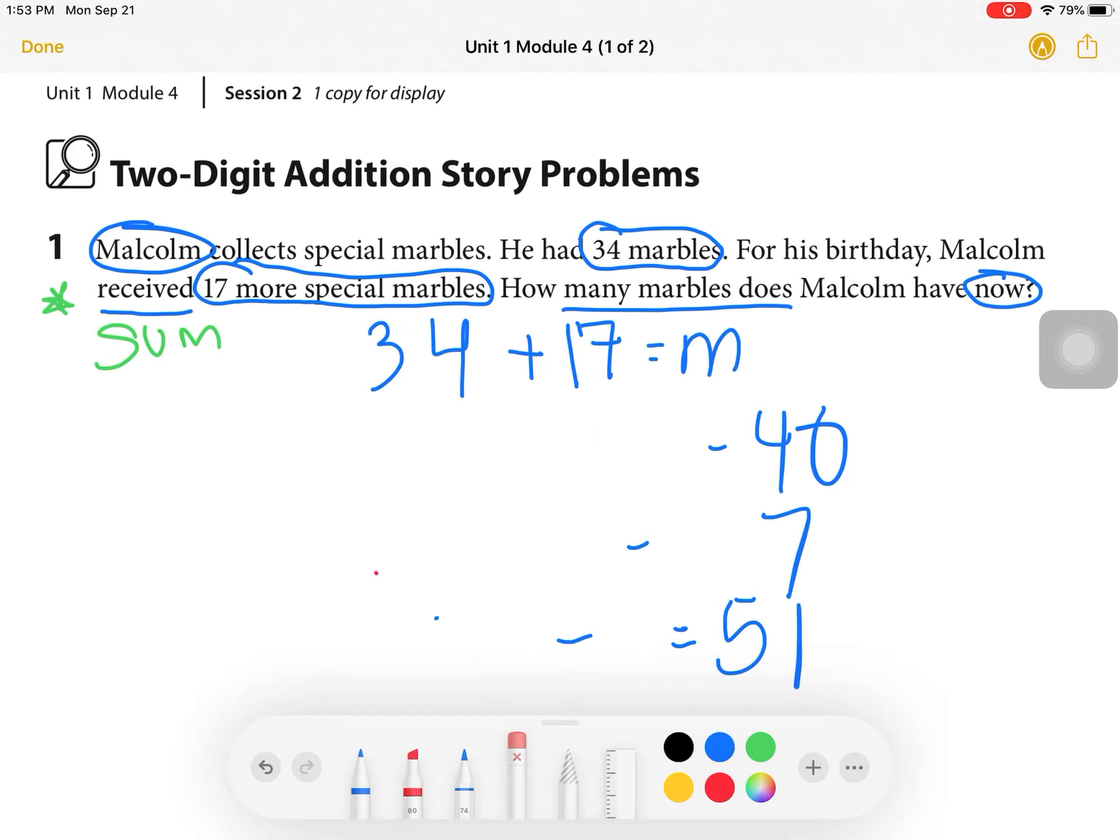Another way that my students like to do this or think of this problem is they like to think of it in terms of a number line. And the first thing they do is they draw their number line out. And they start at 34 or 17. It doesn't matter. And then you can add your 10s and 1s that way. So I'm going to add a 10 first from the 17. And that's going to get me to 44.